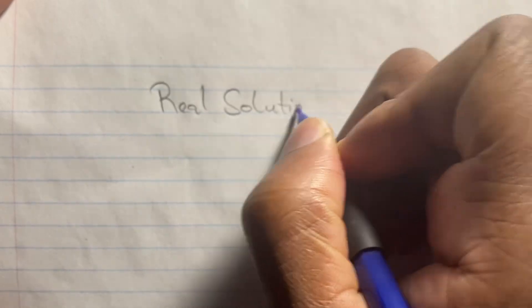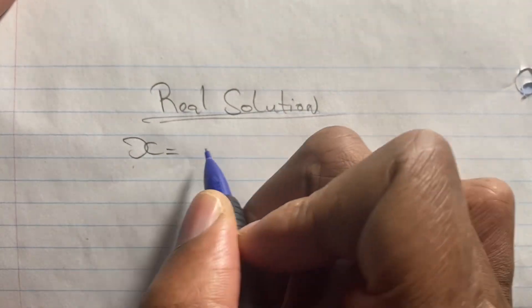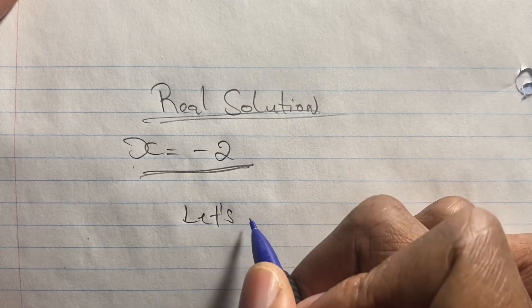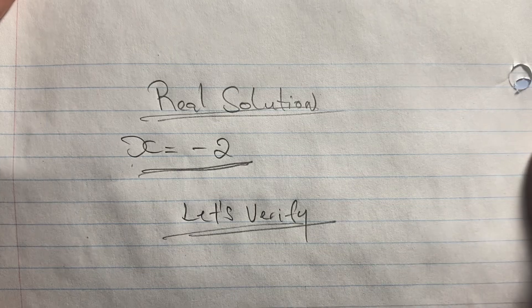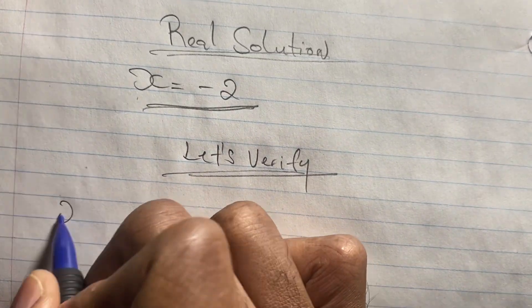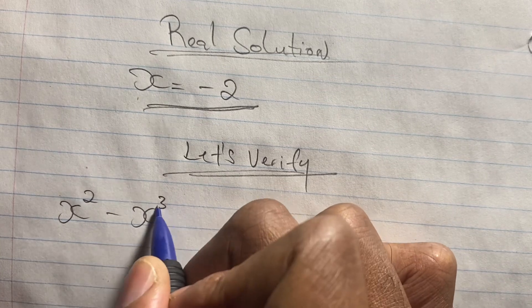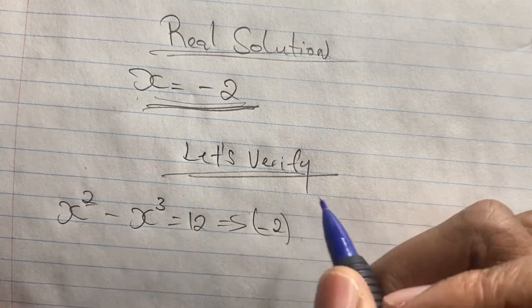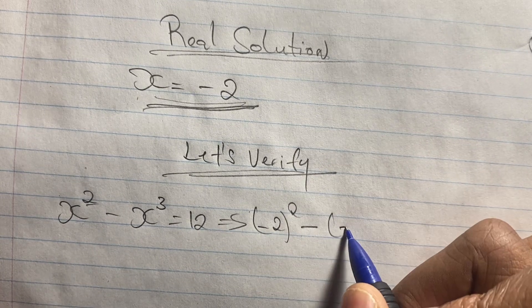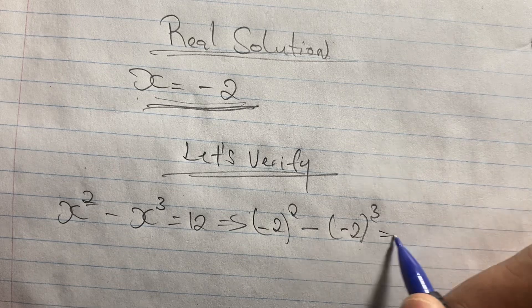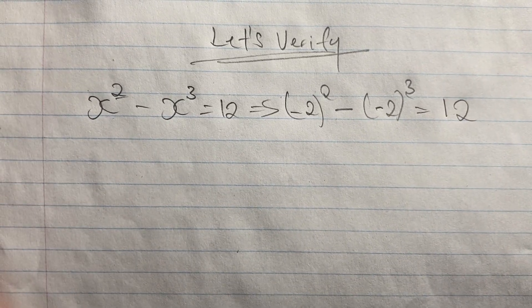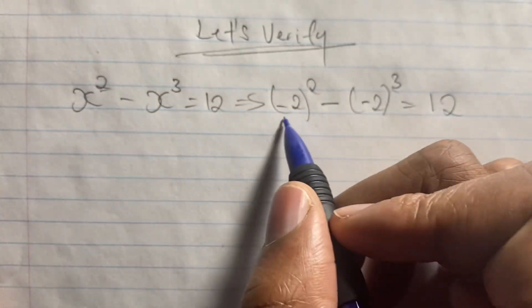We will now verify our real solution x equals negative 2 by substituting it into the original equation. Recalling our original equation: x squared minus x cubed equals 12. Replacing x with negative 2, we get negative 2 squared minus negative 2 cubed equals 12.